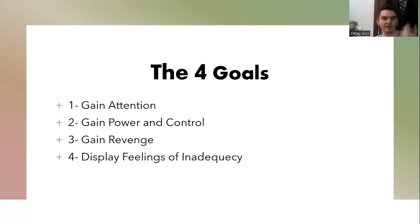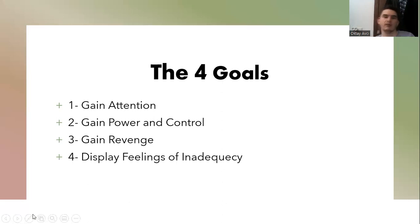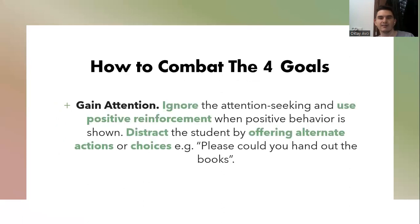Whether they have achieved the first three goals or failed all of them, they will still end up at the fourth goal. So how do we, as teachers, fight off these attempts at gaining control, gaining revenge, and all that? How do we combat these four goals?